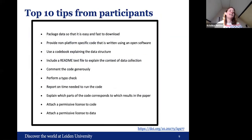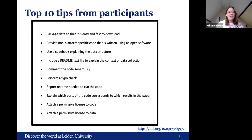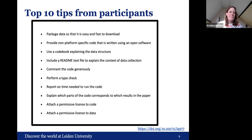One important outcome of this ReproHack was a top 10 tips list from participants who tried to reproduce the papers. They all filled out a form with questions about documentation and how to improve it. The top 10 tips were: package data so it's easy and fast to download; provide non-platform-specific code written using open software; use a codebook explaining the data structure; include a README text file to explain the context of data collection; comment the code generously; perform a typo check; report on time needed to run the code; explain which parts of the code correspond to which results in the paper; and attach permissive licenses to both code and data.